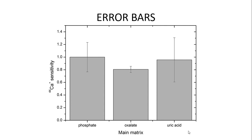For example, on the screen we have this main matrix with three different substances: phosphate, oxalate, and uric acid. Each of these has a different sensitivity to calcium. Phosphate has a sensitivity of 1.0, oxalate is 0.8, and uric acid is just under 1 — looks like about 0.97 or 0.98. When you look at these error bars, they show the possible range of error, meaning although this is our average or mean sensitivity, the true mean can lie somewhere between the top point and the bottom point.